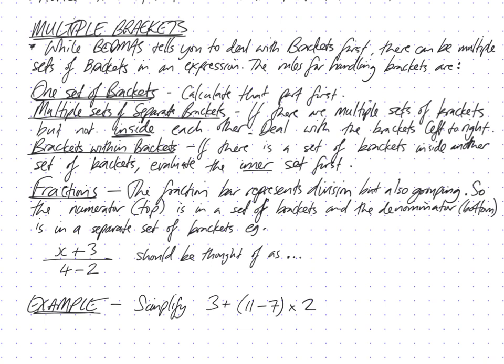The rules for handling brackets are this: if you've got one set of brackets, just follow BEDMAS and calculate that part first. If you've got multiple sets of separate brackets — not inside each other — you deal with the brackets going from left to right. And brackets within brackets: if there is a set of brackets inside another set, you need to do the inner set first. If there are multiple levels of nested brackets, you deal with the innermost bracket first, then the next innermost, then the outside one.